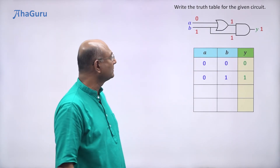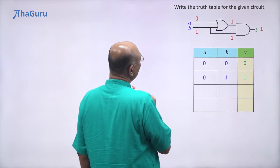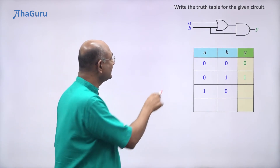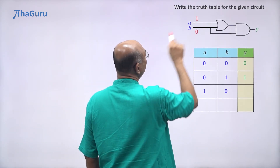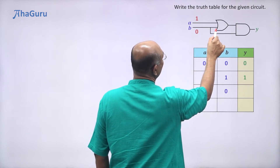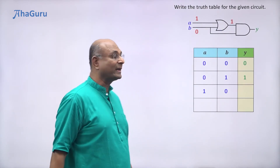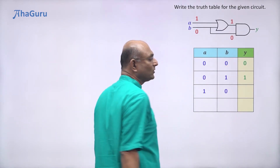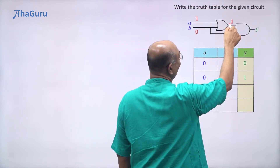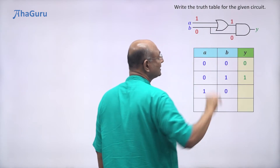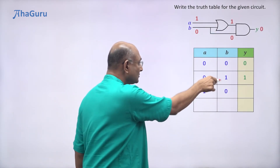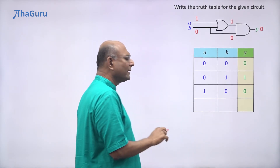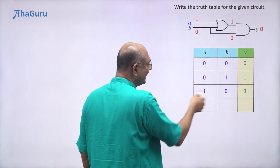The third case is A=1, B=0. This input is one, this input is zero. One plus zero through the OR gate gives output one. But B is zero, so the other AND gate input is also zero. One AND zero is zero, so Y is zero. So A=1, B=0 gives Y=0.